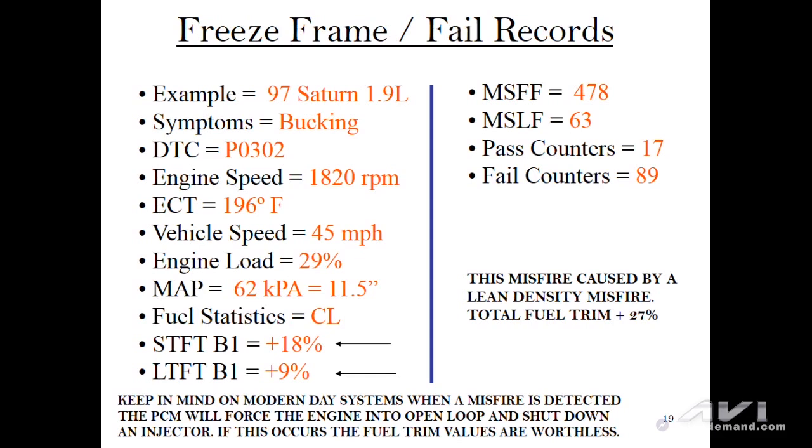Keep in mind that you can find this out by looking at the freeze frame: modern vehicles, when the PCM detects a misfire bad enough, will force the vehicle back into open loop, which means your short-term and long-term fuel trim values are worthless. Make sure the problem is caught in closed loop, then look at your fuel trim values. An ignition related misfire will not cause a significant fuel trim shift, whereas a lean density misfire will create double-digit fuel trim additions. On the flip side, a rich density misfire would show a total fuel trim at a minus double-digit value.